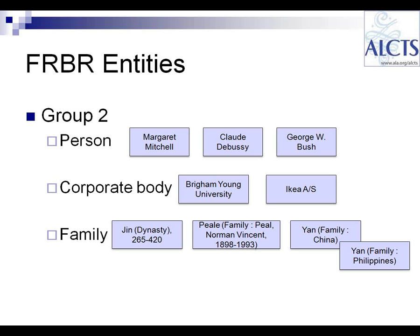Attributes have been defined for each entity. For Person, these include Name, Dates, Title, Other Designation, Gender, Place of Birth, Place of Residence, Language of Person, and Field of Activity. For corporate body, attributes include name, number (for a meeting), place associated with the corporate body, date, type of corporate body, language, and field of activity. For family, attributes include name, type of family (such as a clan or dynasty), dates, places associated with the family, and history of the family. The RDA chapters dealing with these entities tell us how to record the attributes. RDA is looking toward a database structure where we would have a separate entity record for each person, corporate body, or family, and we would create such a record only once for each entity.